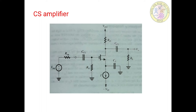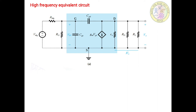In the previous session we introduced some parameters like three frequency bands: mid band, low frequency band, and high frequency band. We also came to know the expressions for the mid band gain as well as the meaning of bandwidth. Now in this session let us try to derive the gain of this common source amplifier where the circuit is under the influence of high frequencies. Our intention is to find the gain or transfer function at the upper 3 dB frequency f_H.